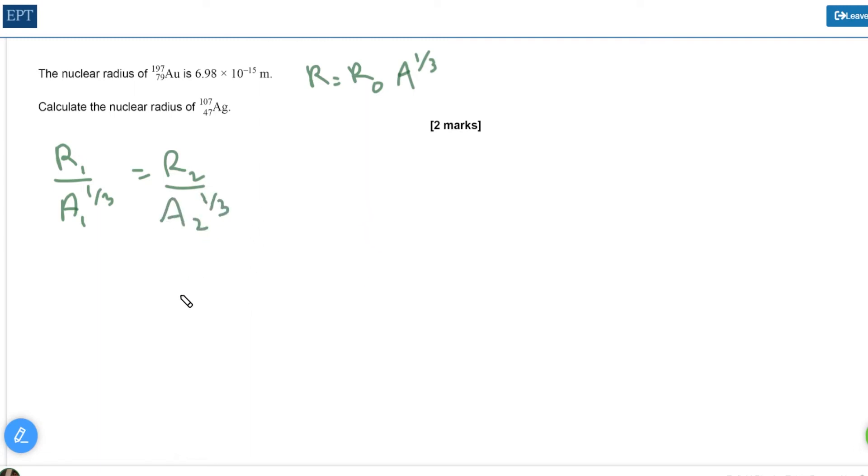So r1 is going to be the details for gold, Au, and r2 will be the details for silver, Ag. We're after r2, the radius of silver. So let's set r2 equal to r1 A2 to the third divided by A1 to the third.